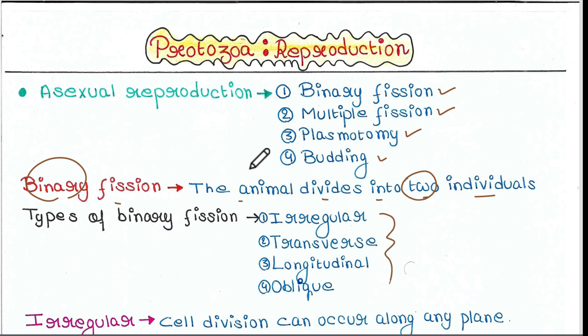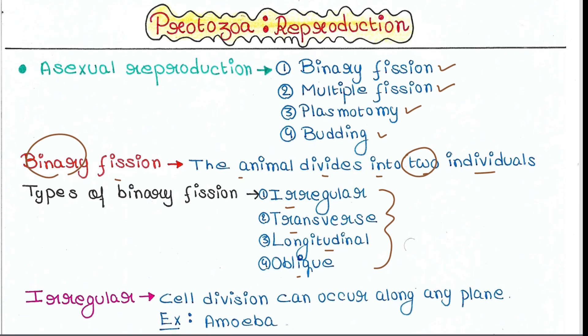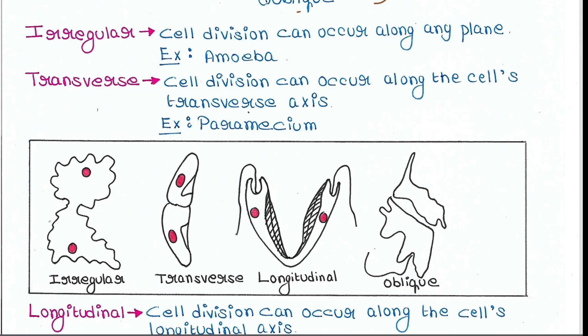There are four types of binary fission: irregular, transverse, longitudinal, and oblique. In irregular binary fission, cell division can occur along any plane. It can occur in any direction, that's why this is called irregular. It occurs in amoeba.